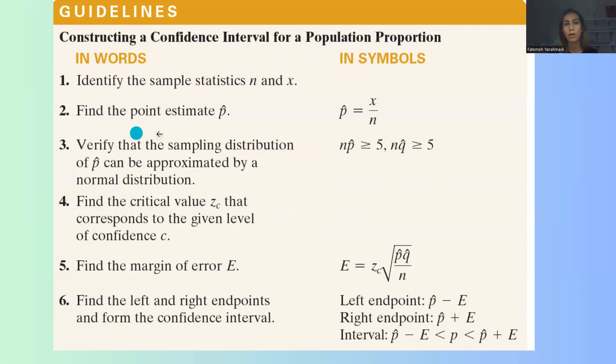Then you need to find the point estimate p-hat. To find point estimate p-hat, it is equal to x divided by n. And again, x is the number of yeses, the number of successes in your sample, and n is the sample size.